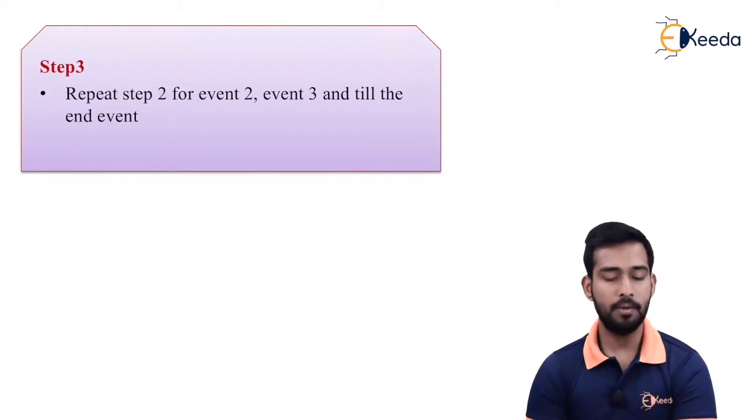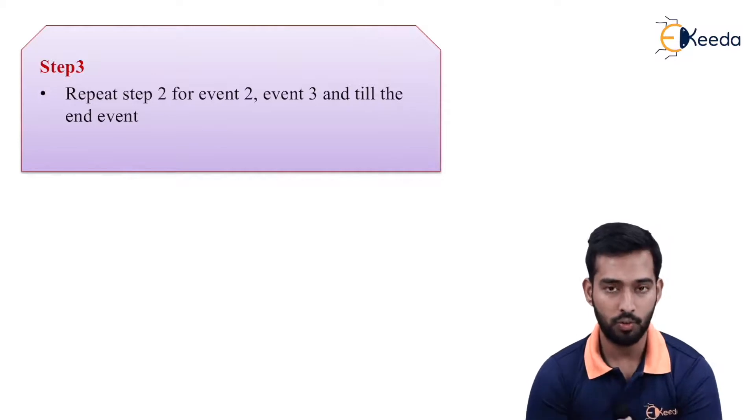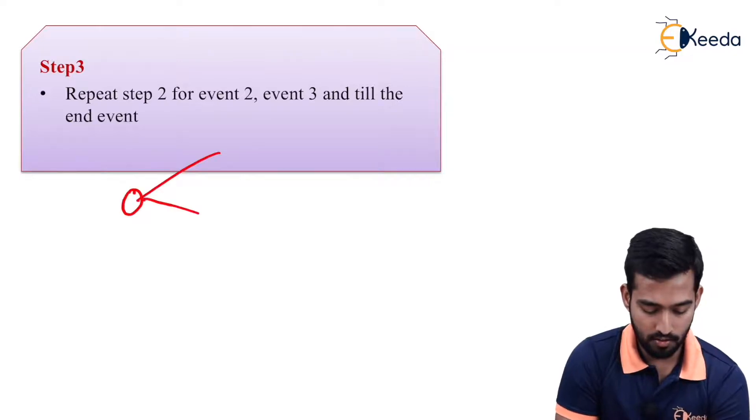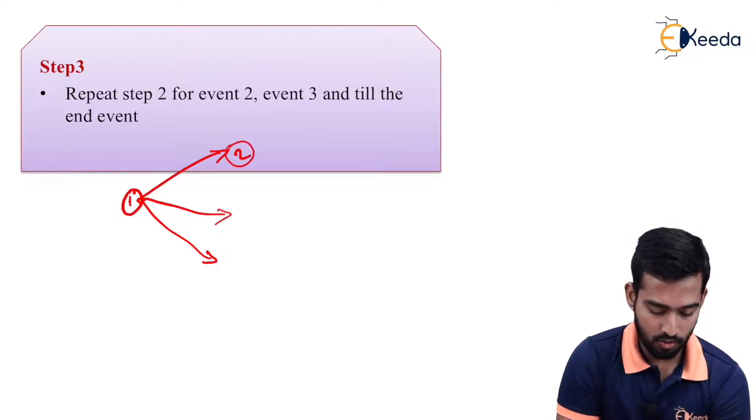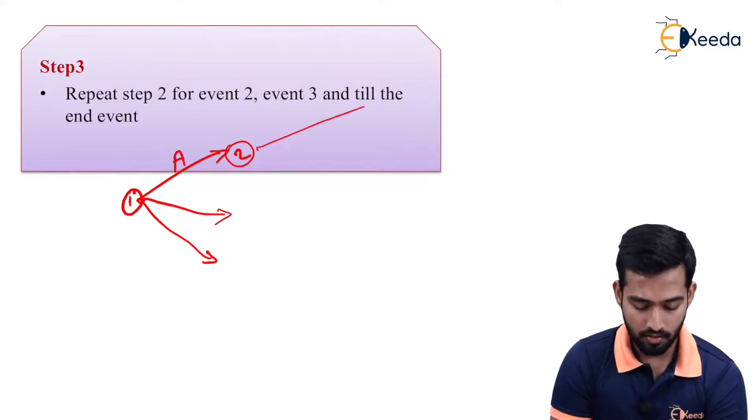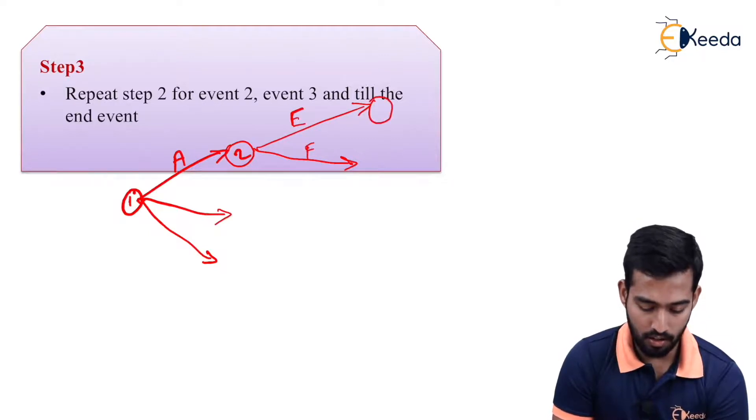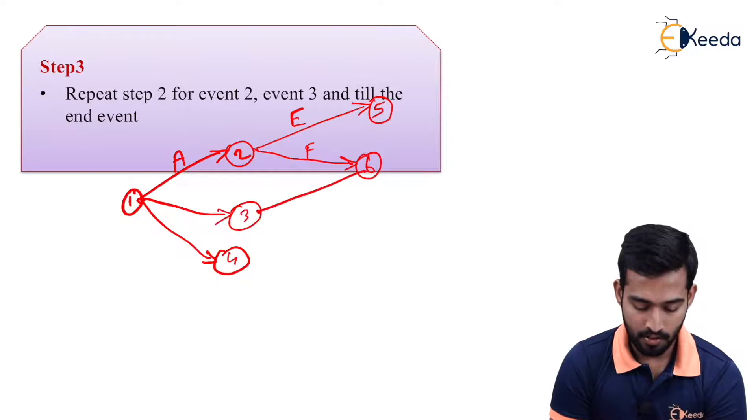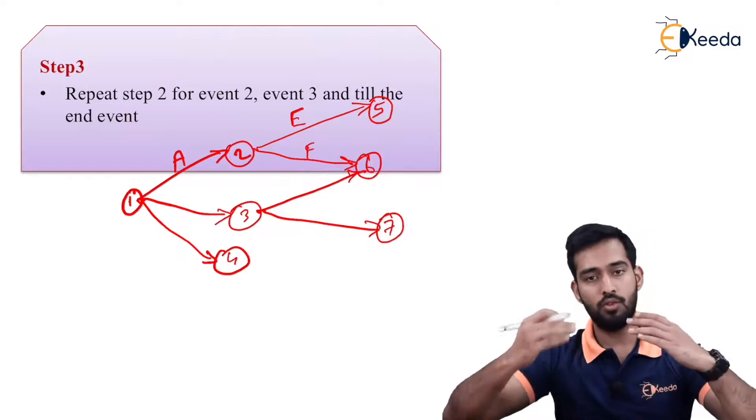Step three: Repeat step two for event two and event three till the end event. As we have seen, we are given the numbers like two for activity one. From activity A, we are getting two more activities like E, F. Accordingly, we have to number them. This is three and this is four, so it should be five and six and likewise. From three, suppose we have one more event, that is seven. Likewise, we have to go in order.